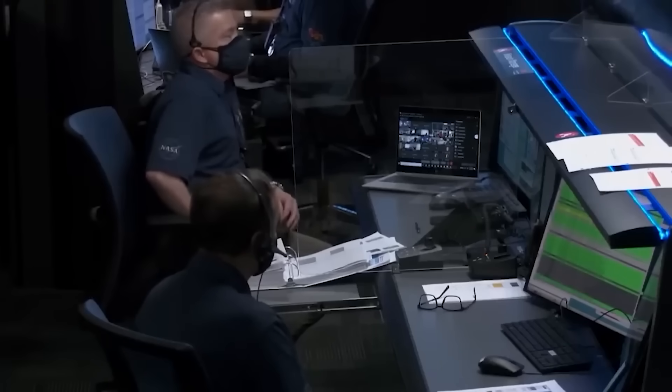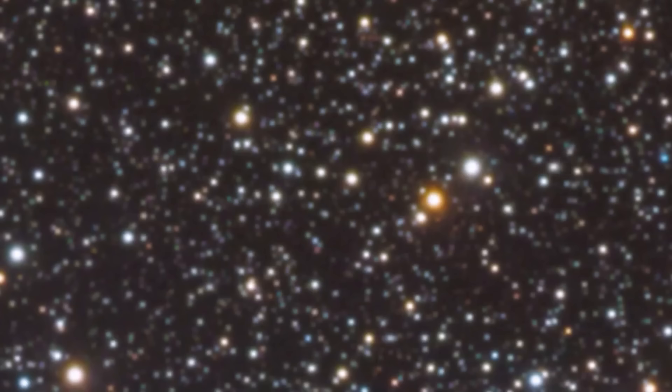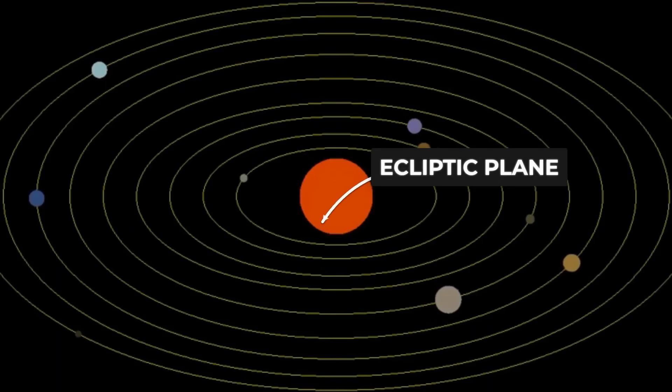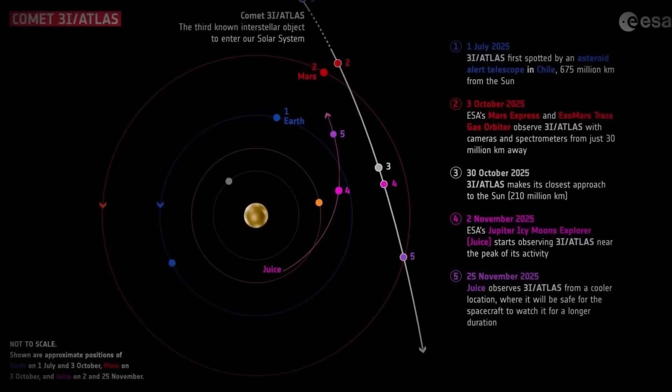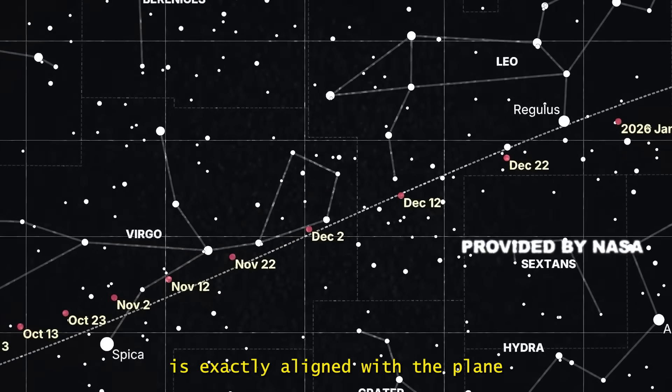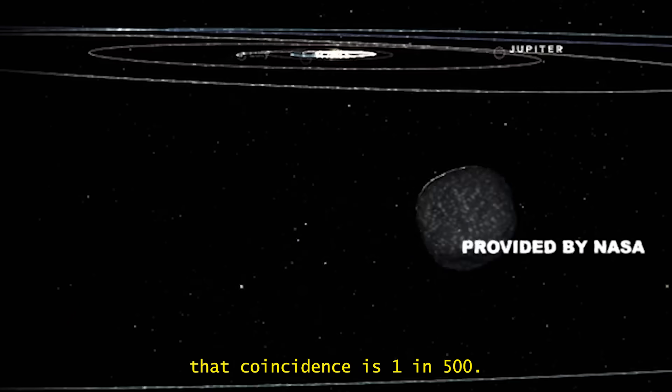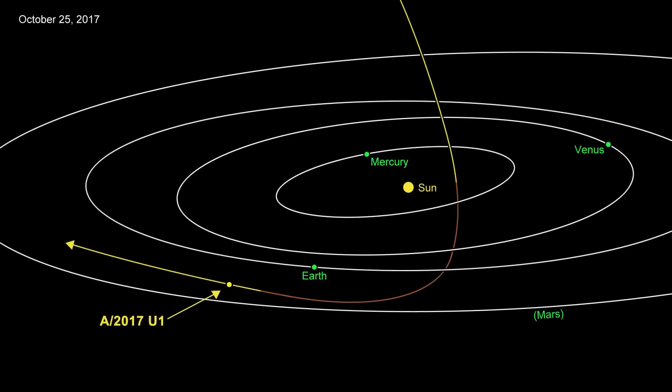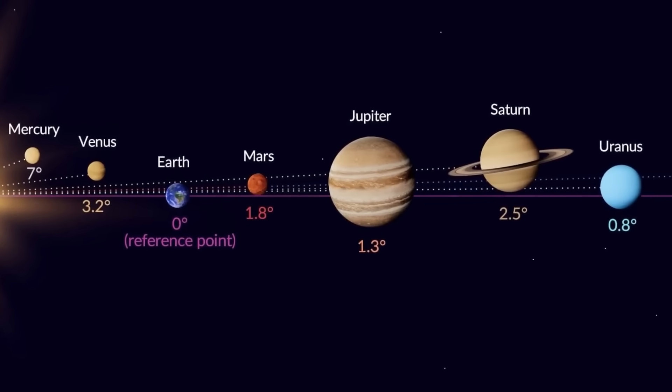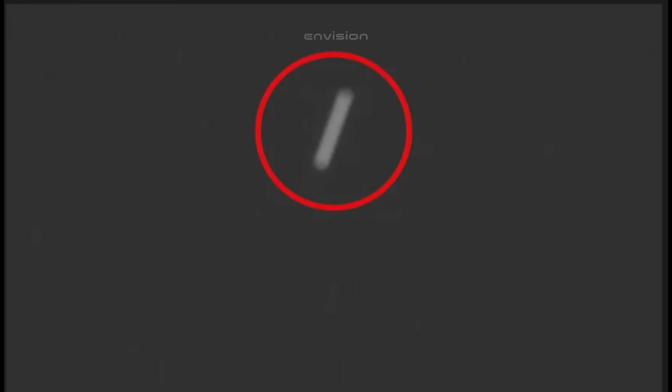When astronomers plotted the approach vector, they anticipated disorder. Objects arriving from interstellar space should tumble in at chaotic angles, their trajectories warped by millions of years drifting through galactic forces. Instead, 3i Atlas arrived nearly parallel to the ecliptic plane, the geometric disk where planets orbit. Orbital inclination? 4.89 degrees. Statistical probability of this alignment occurring naturally, under 1%. The trajectory of this object is exactly aligned with the plane in which the planets orbit the sun, within 5 degrees. That coincidence is 1 in 500. Neither Oumuamua nor Borisov exhibited this precision.